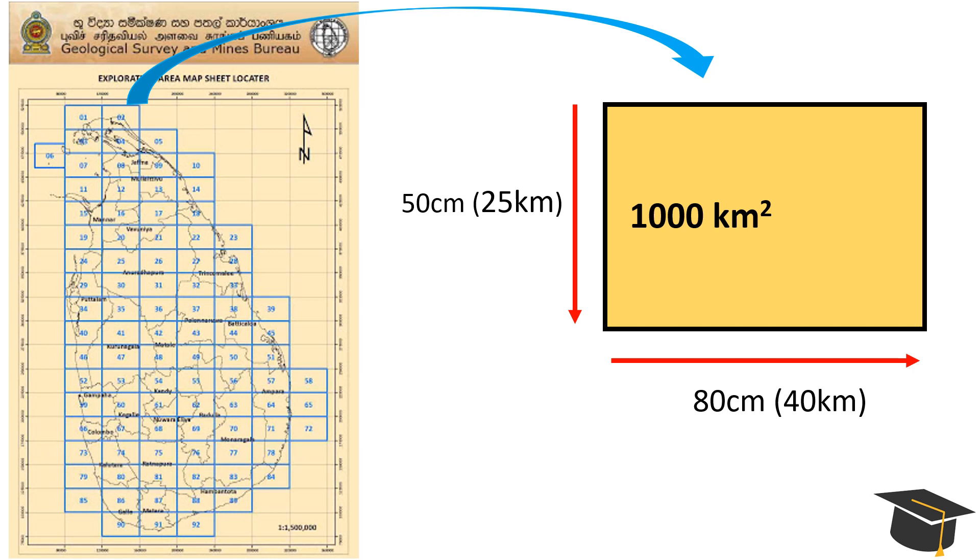The map projection adopted for Sri Lanka is the transverse Mercator projection with the central meridian through Pibiru Talagala. According to metric series 1 to 50,000, the whole country is covered with 92 sheets of topographic maps. Each map is 50 centimeters in width and 80 centimeters in length, covering an area of 1000 square kilometers.